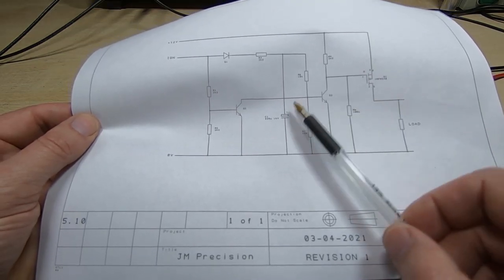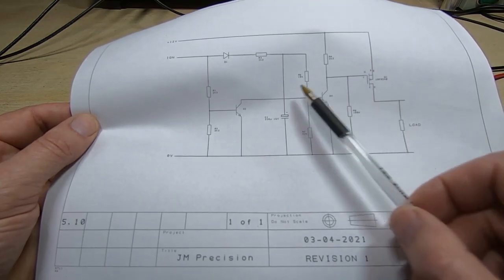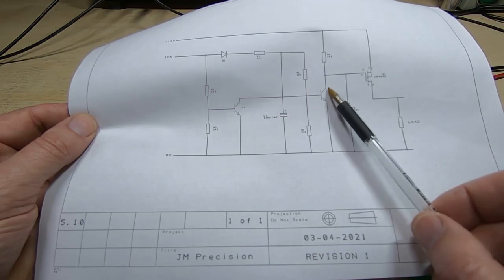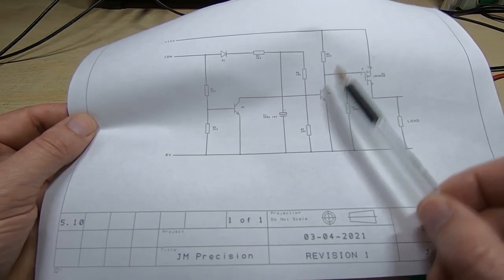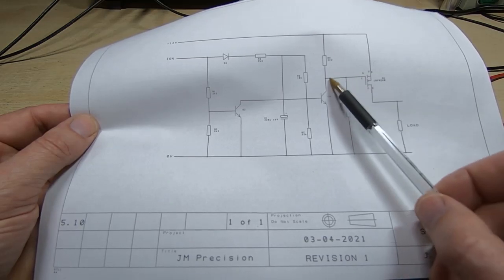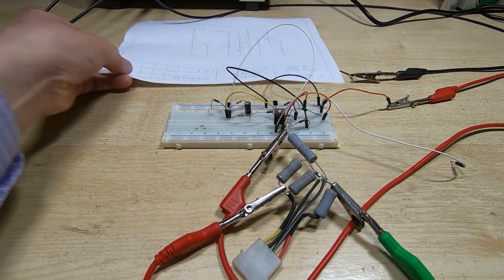So that will then supply current from the permanent 12 volt supply through to the load, and that will keep the load powered up until the capacitor voltage dies away, at which point this transistor will turn back off. And through this resistor, the gate of the MOSFET is pulled back high and so it turns off. So we'll just demonstrate that.